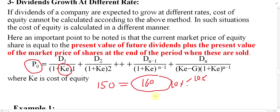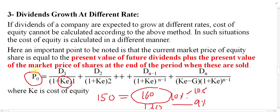If you apply 10 percent and find the value is, say, 130 — which is less than 150 — then you have to reduce the rate, for example to 9 percent. You keep applying different rates until both sides become equal. That is why it is called the trial and error method. Any rate that equalizes both sides of the equation can be called the cost of equity.